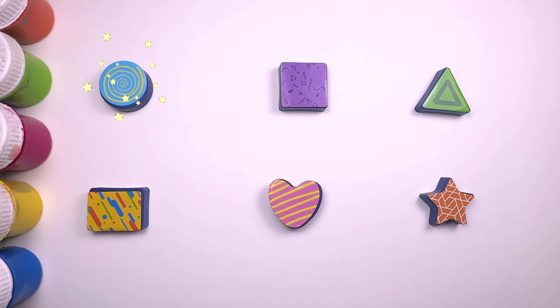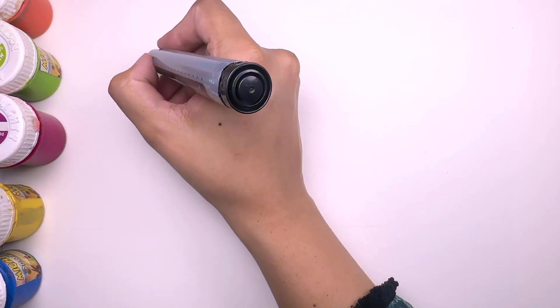This is a circle. This is a square. This is a triangle. This is a rectangle. This is a heart. H for heart. This is a star. S for star.